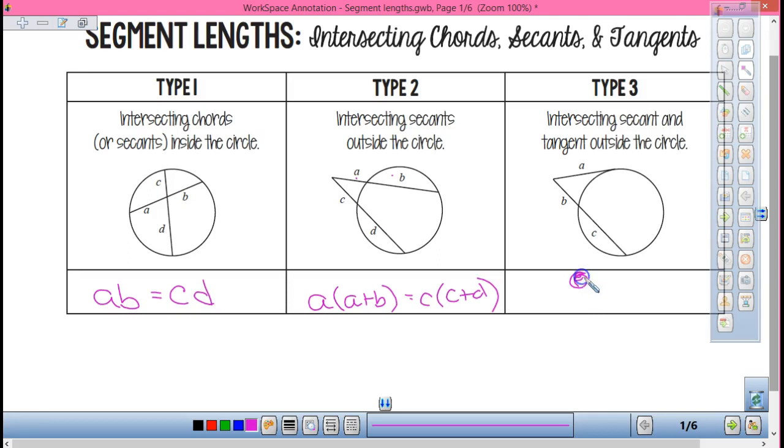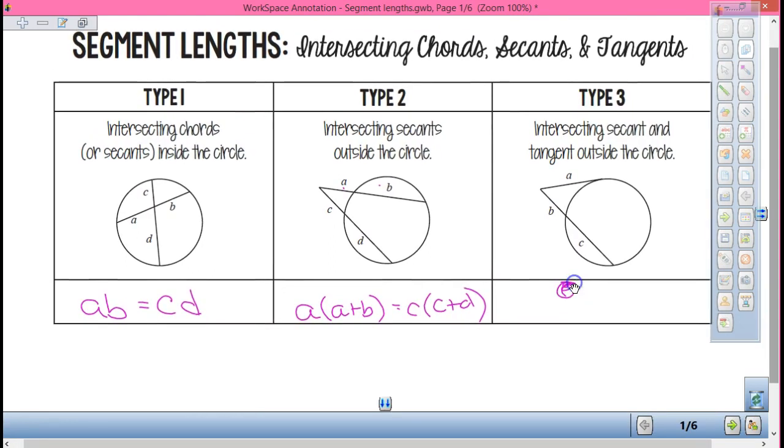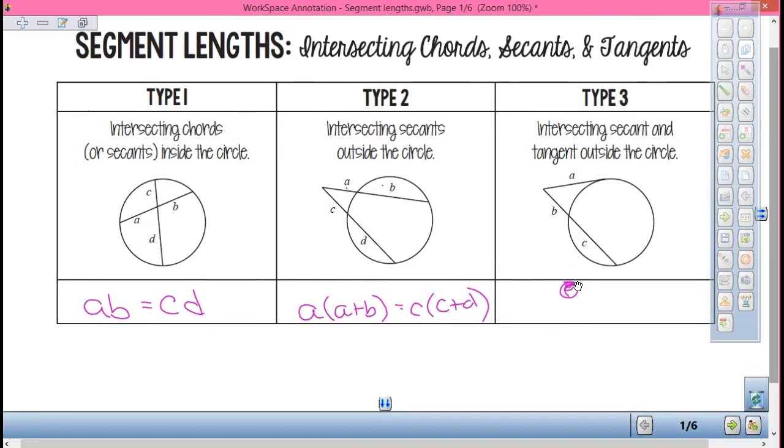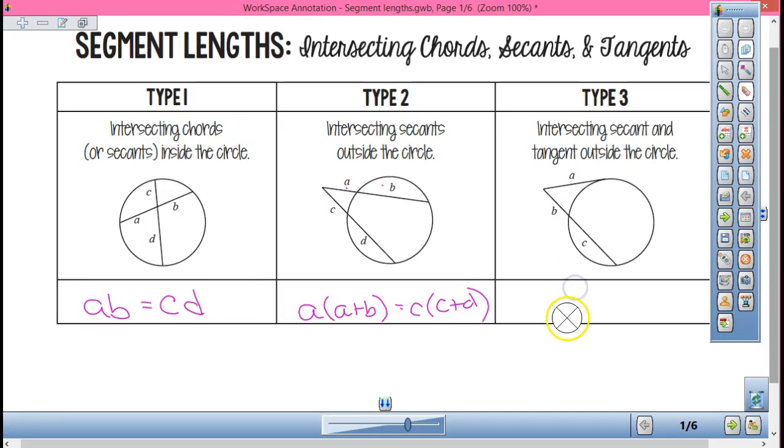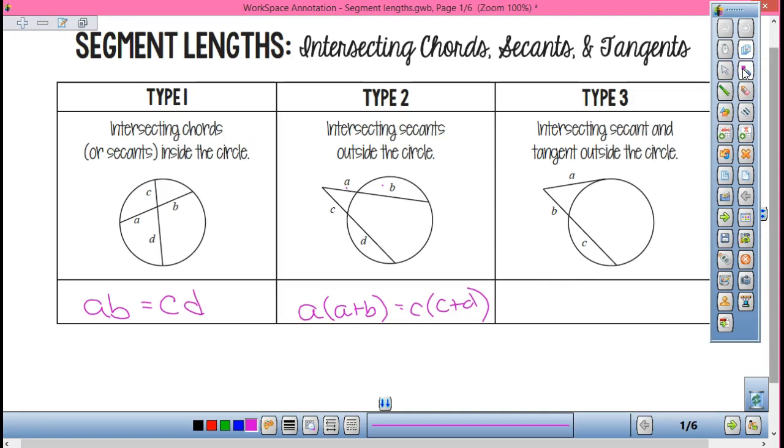And then the last one, if one of them is a tangent, there's only one value there. So you notice there's just one value here, right? So it's A squared equals, and then this is the same as over here. What's outside? B times A plus C.